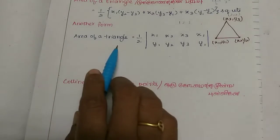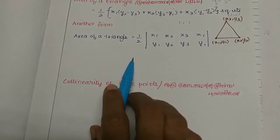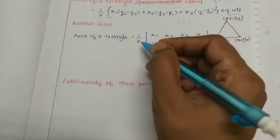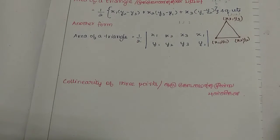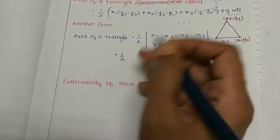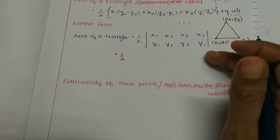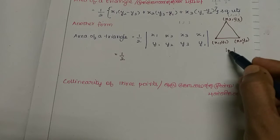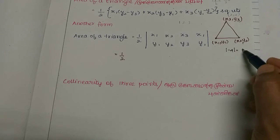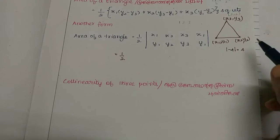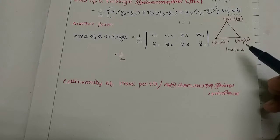The area of the triangle is half bh — half into b into h. In the next step, the formula is half into the modulus. The modulus means if we get a minus number, it becomes a plus value — that is the change. That is why the area of the triangle formula has a modulus: there is a minus result possible.